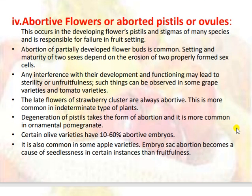Abortive flowers or aborted pistils or ovules occur in the developing flower pistils and stigmas of many species and are responsible for failure in fruit setting. Abortion of partially developed flower buds is common. Setting and maturity of the two sexes depends on the formation of two properly formed sex cells; any interference with their development and functioning may lead to sterility or unfruitfulness. This can be observed in some grape and tomato varieties. The red flowers of strawberry clusters are also abortive. Degeneration of pistils is more common in ornamental pomegranate. Certain olive varieties have up to 60% abortive embryos, and it is also common in some apple varieties.